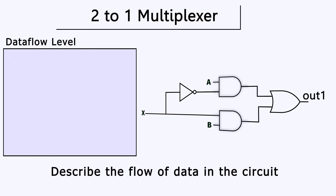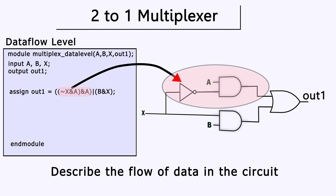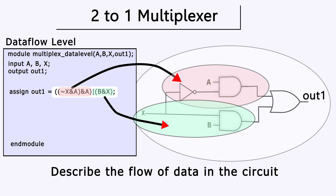We can also use the data flow level, which describes the flow of data in the circuit. We've described the 2-to-1 multiplexer using a single line of code using logical operators. Verilog provides a large number of these operators to almost turn our circuit into a kind of boolean logical sentence — not X and A, or B and X. Data flow modeling is very efficient but it can become very cryptic.